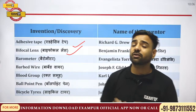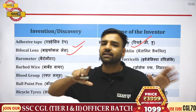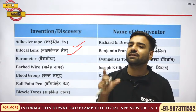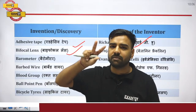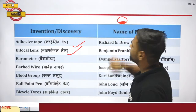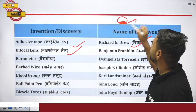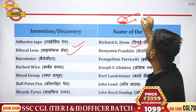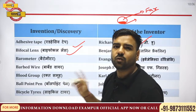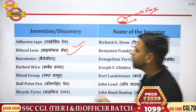In nearsightedness we cannot see far objects clearly. In old age, people cannot see anything clearly — neither near nor far — so they use bifocal lenses, which are spectacles with both types of lenses. The downward part helps in reading newspapers and the upper part helps in looking far. Bifocal lens was discovered by Benjamin Franklin.